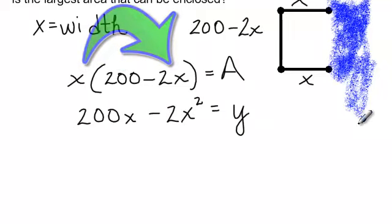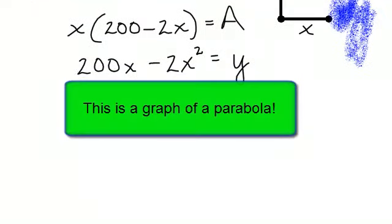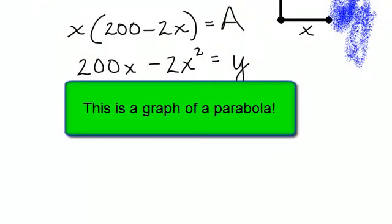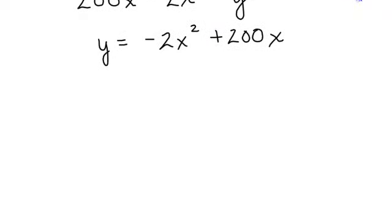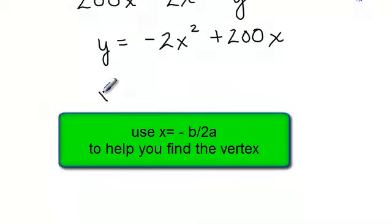And if you notice, I just have a parabola here. I can rewrite this as y equals negative 2x squared plus 200x. So in the math world, this is an upside down parabola and I am just looking for the vertex. So I am going to use x equals negative b over 2a to find my vertex.